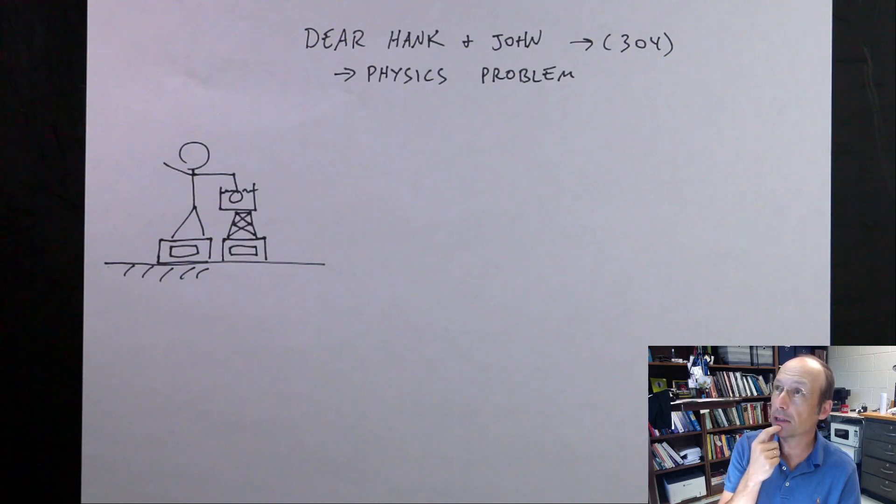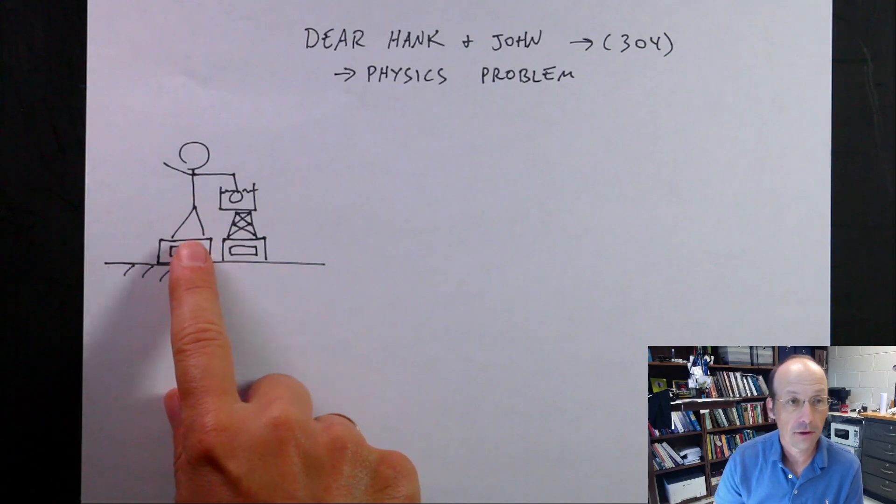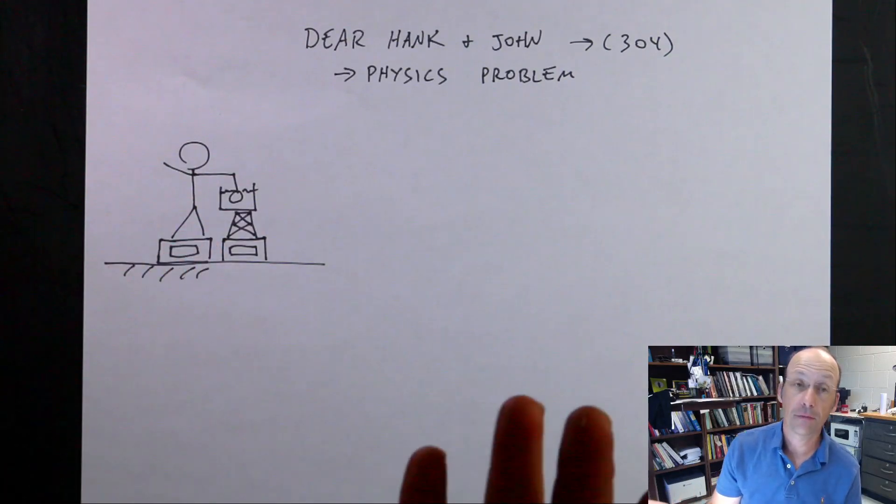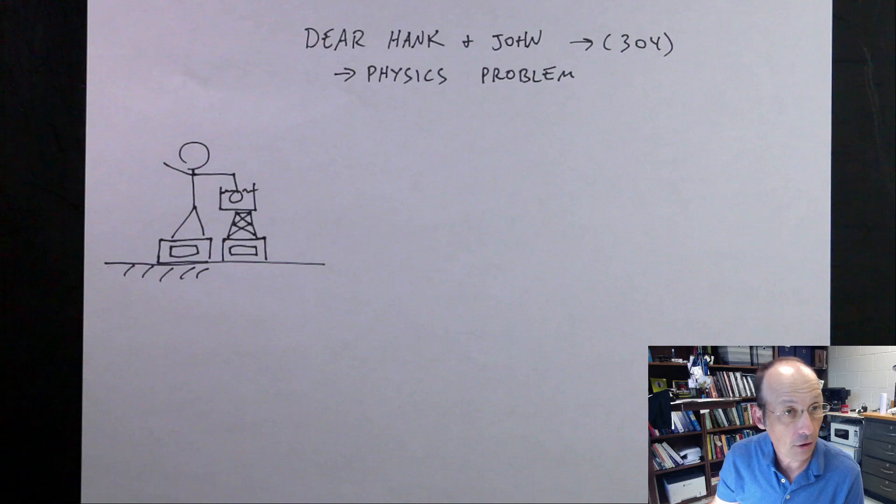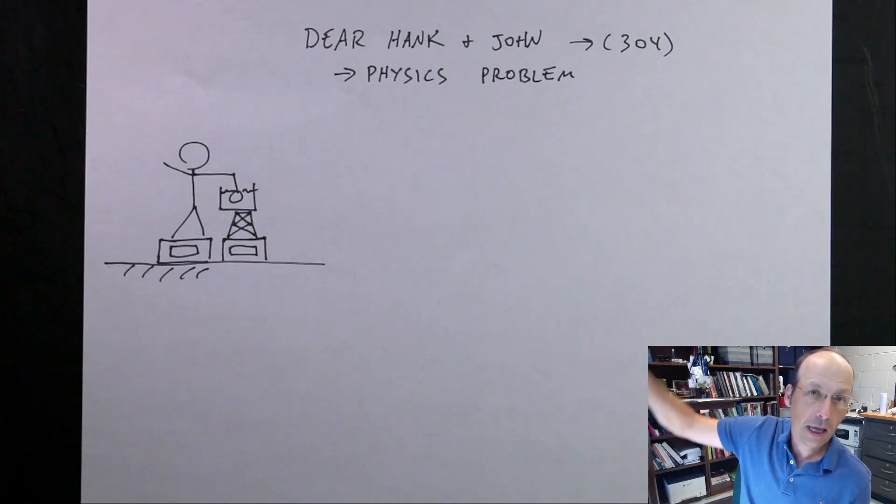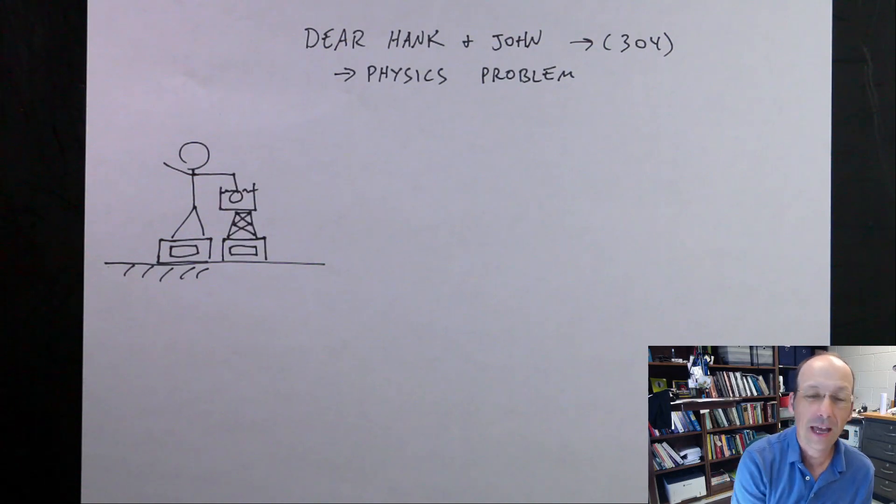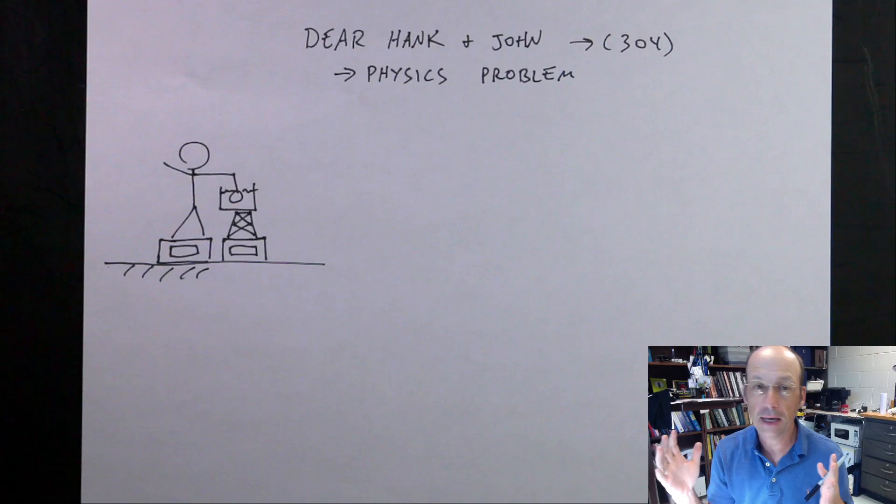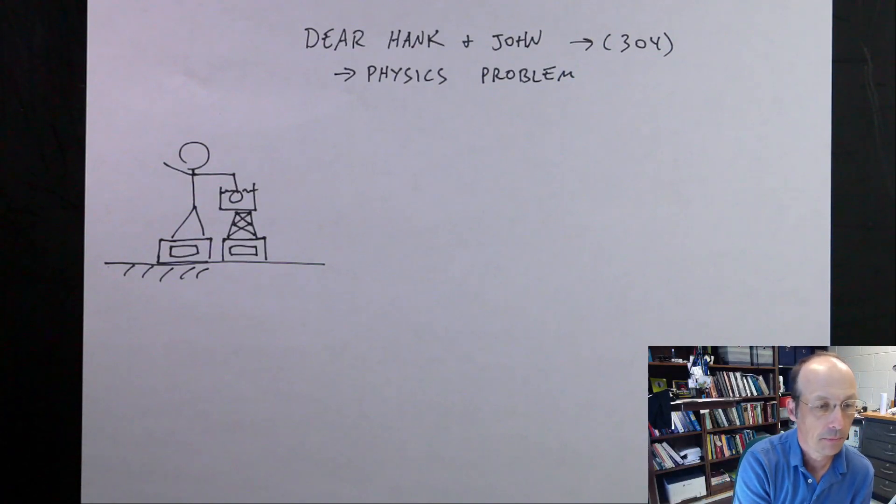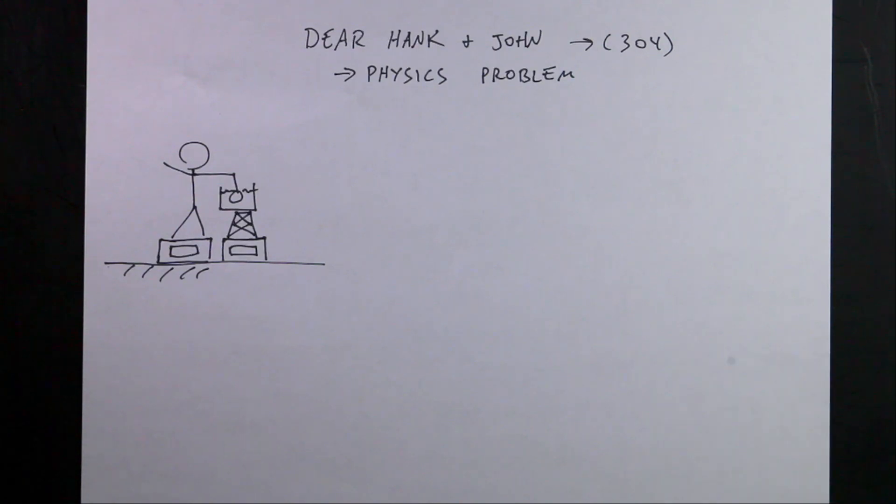The question was something like this: suppose you have a person standing on a scale, and then there's another scale right next to them with a bucket of water. They stick their hand in the bucket of water. What happens to the two scale readings? I'm going to turn off this camera.